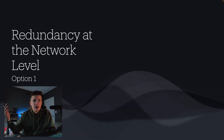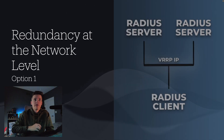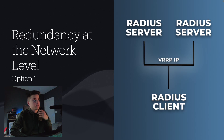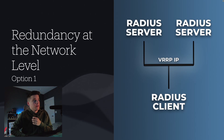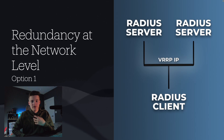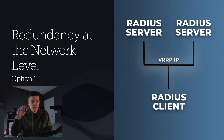The first option is redundancy at the network level. So essentially, you'll have two or more servers with a floating IP address in between them. That IP address is going to fail over when the server crashes or goes offline, and it will fail over to an alternative server. You can weight them and give them priorities.